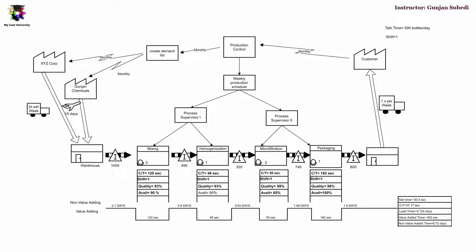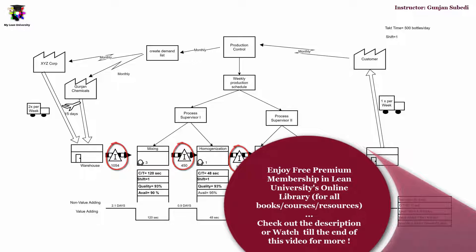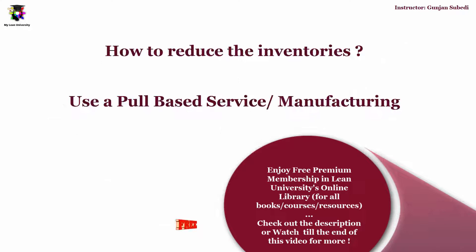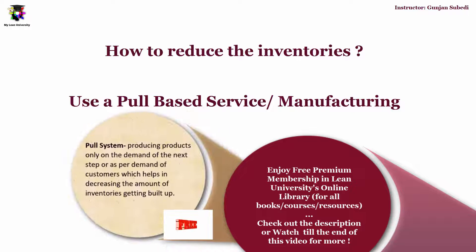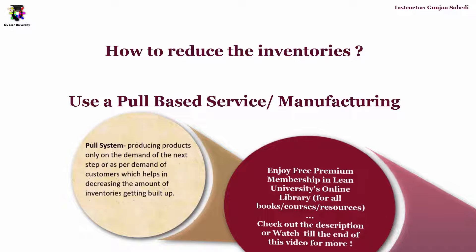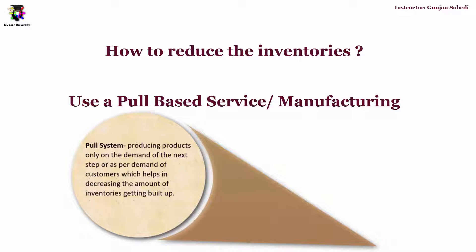In another example, it seems like there are a lot of inventories between each step of the process. So inventories and long waiting times are the bottlenecks of the process. We can improve the process by reducing inventory using a pull system, which is a system that produces products or services only on the demand of the next step or as per the demand of the customers, helping to decrease the amount of inventory building up.